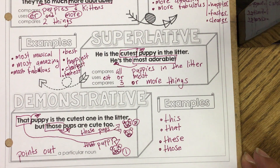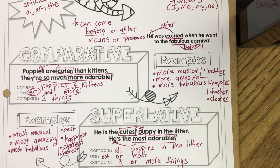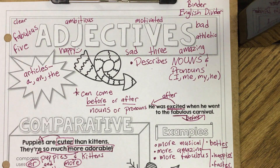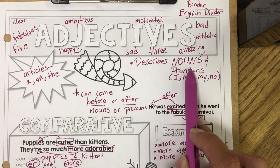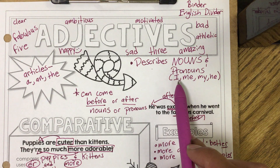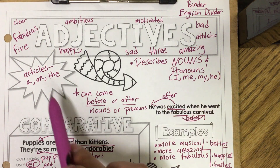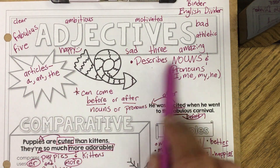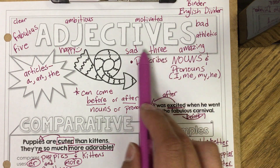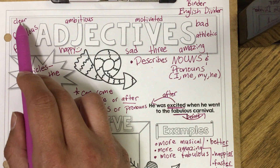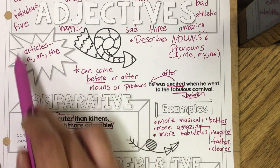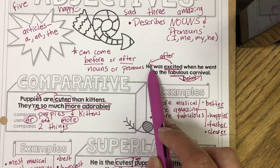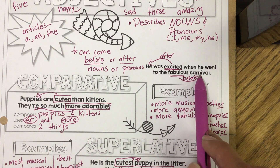Once you're done writing all of these notes, if at any point you didn't finish, please rewind and pause at certain spots. To recap: adjectives are describing words — they describe nouns (a person, place, or thing) and pronouns. Examples of pronouns are I, me, my, he, she, they. Articles — a, an, and the — are also adjectives. Adjectives can come before or after the noun or pronoun: 'excited' came after the pronoun 'he,' and 'fabulous' came before the noun 'carnival.'